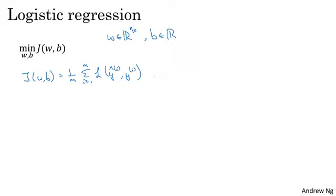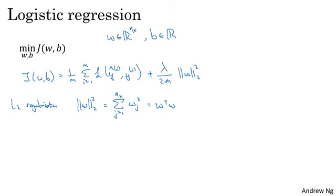So to add regularization to logistic regression, what you do is add to it lambda, which is called the regularization parameter, times lambda over 2m times the norm of w squared. So here, the norm of w squared is just equal to sum from j equals 1 to nx of wj squared, or this can also be written w transpose w, which is just the square Euclidean norm of the parameter vector w. This is called L2 regularization, because here you're using the Euclidean norm, also called the L2 norm of the parameter vector w.